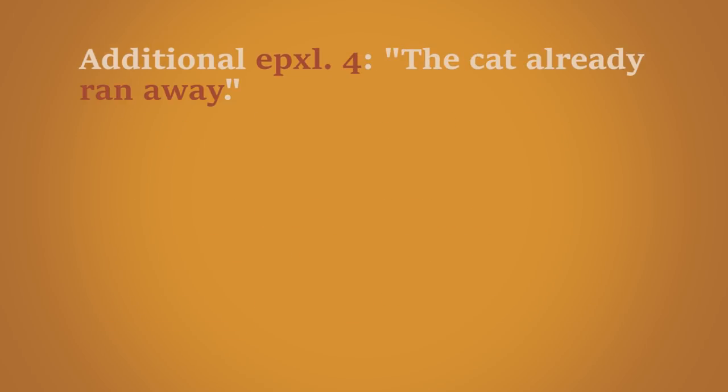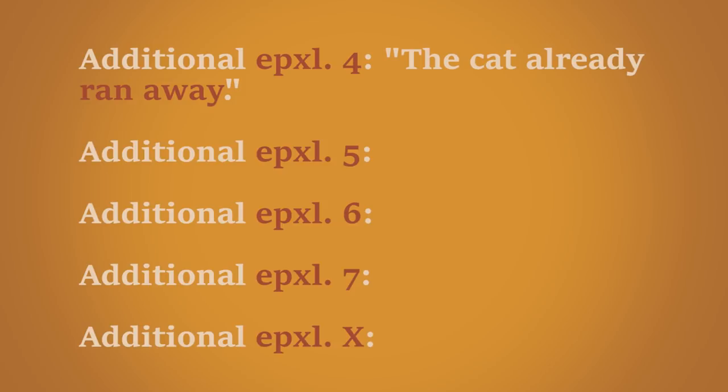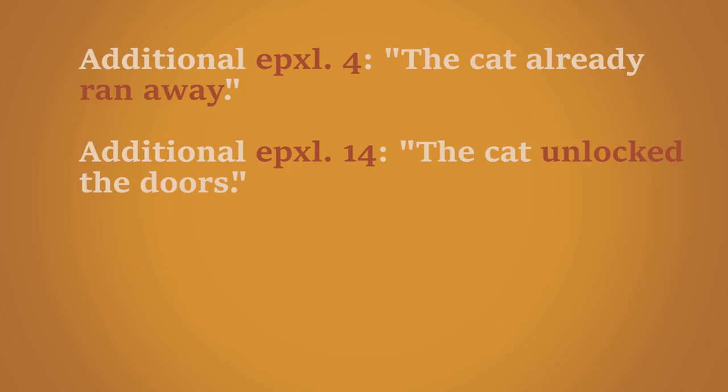This conversation, in principle, could go on forever. Every objection you would make can be countered with an additional hypothesis. For example, at some point in the conversation, Jimmy could argue that the cat somehow unlocked the doors you remember locking, or even that the cat is just invisible.